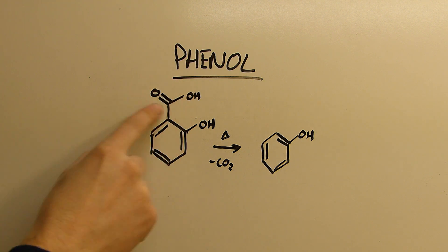to essentially remove it from an aromatic ring. You can see how the group is here and it's no longer attached over there. So basically it's done by just heating the crap out of salicylic acid.